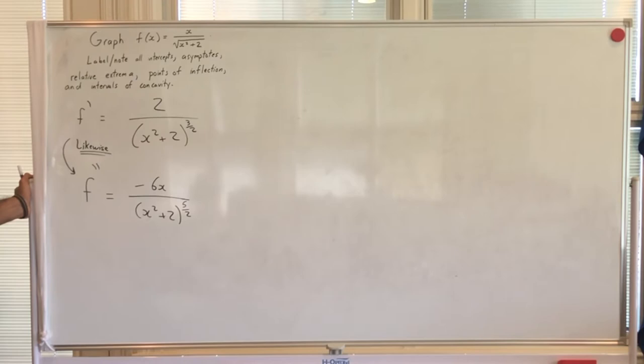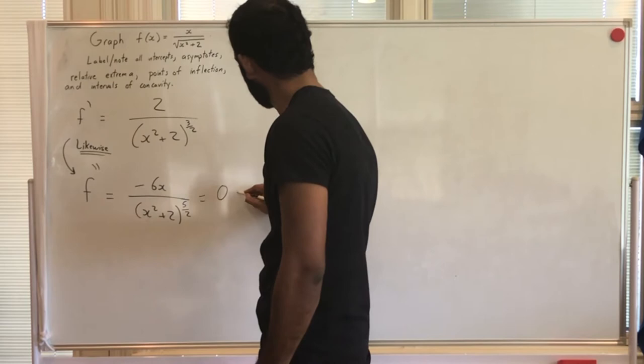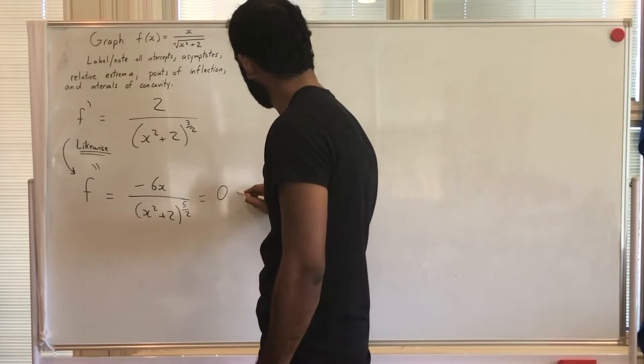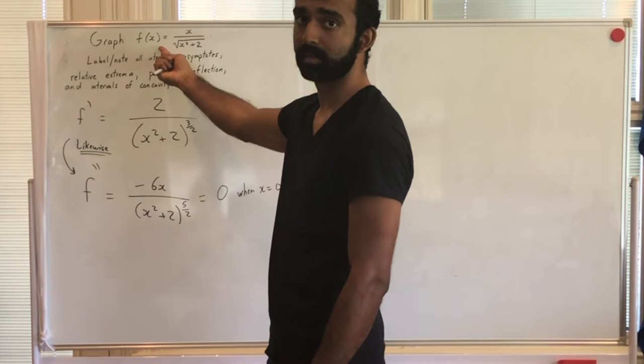Now I need to do the calculus: intervals of concavity, points of inflection, relative extrema — critical numbers. Starting with the second derivative: is it ever zero? Yes, when x = 0. And does x = 0 correspond to a point on the original graph? Yes — it's the origin.